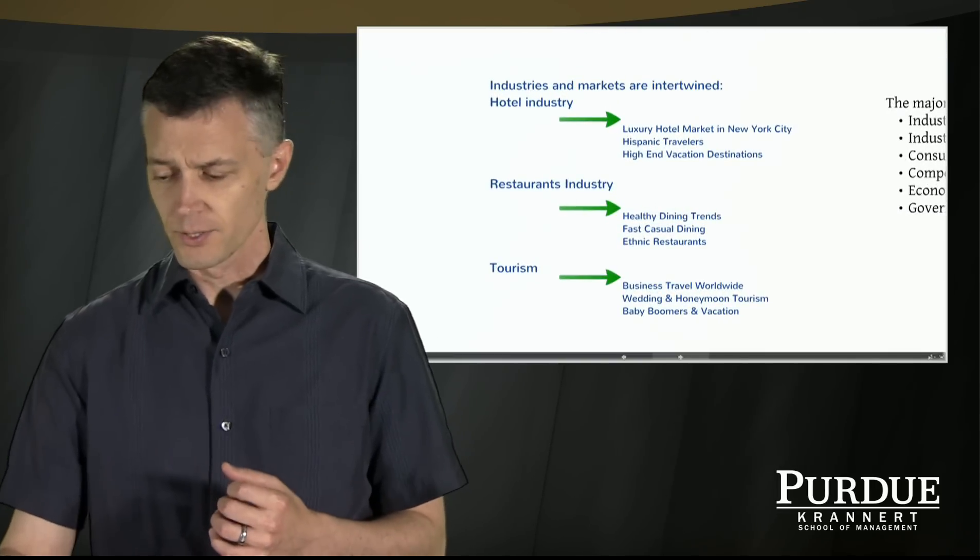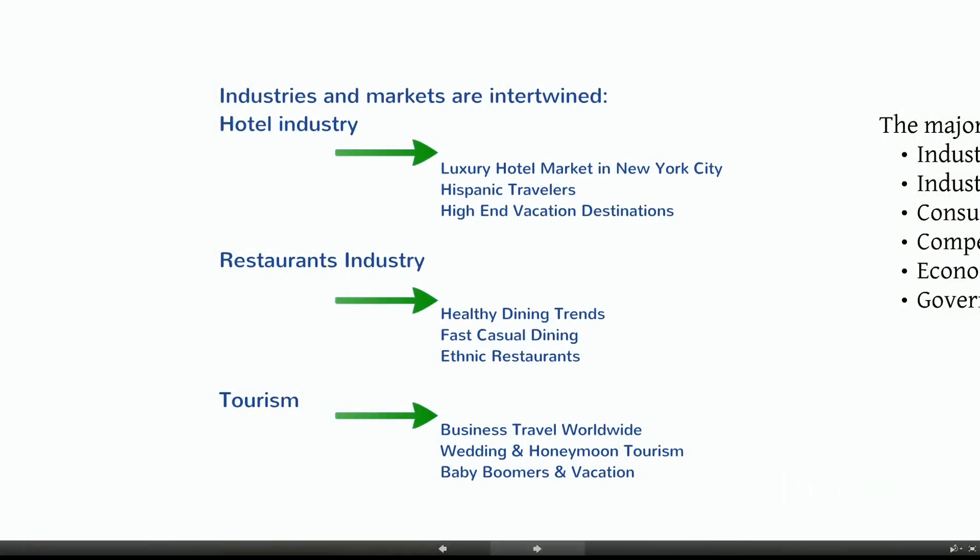Industries and markets are intertwined. Here are three examples: the hotel, restaurant, and tourism industries. In the hotel industry, while it encompasses a variety of things, you can see there are smaller niche markets built into it — the luxury hotel market in a specific city like New York, or a specific demographic group like Hispanic travelers, Asian Americans, or soccer moms.